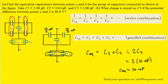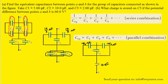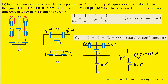Let's once again redraw the circuit and combine those two capacitors into a single equivalent capacitor. Next, we can see that the capacitors marked 10 thirds microfarads, C3, and then 10 thirds microfarads again are all in parallel. So we can combine those three by simply adding their individual capacitances together: 10 thirds microfarads plus C3 at 2 microfarads, plus 10 thirds microfarads. When you add those all together, you end up with 26 thirds microfarads. So that is the equivalent capacitance of those three parallel capacitors.